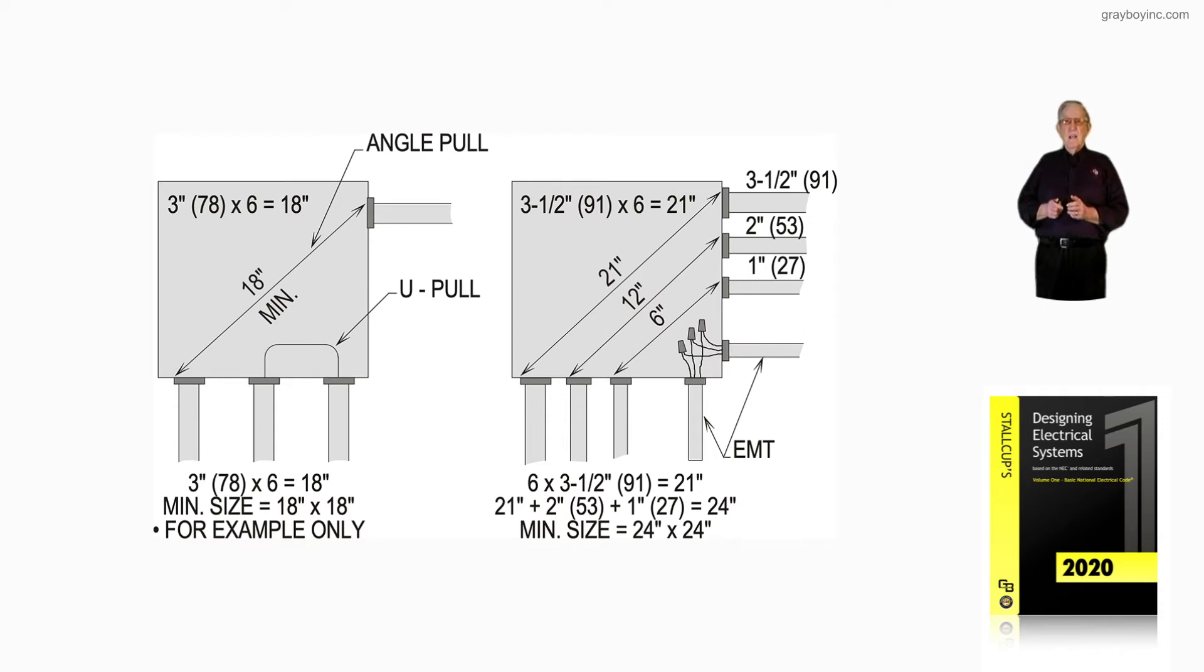Notice we have 3½, 2-inch, and a 1-inch. So the code requires that we take six times the largest, 3½, and add that to the remaining conduits on that wall. So you would have 21 inches plus 2 plus 1, giving us 24 inches.